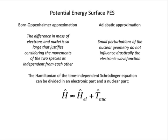Thanks to these approximations, the Hamiltonian, the general Hamiltonian for the time-independent Schrodinger equation, can be divided in two parts, one electronic and one relative to the movement of the nuclei.